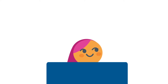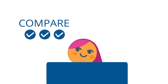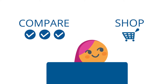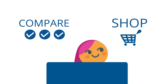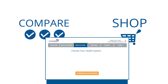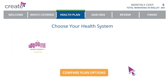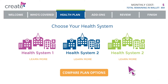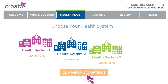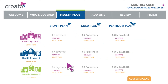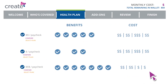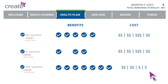Once that is set, you can begin to compare and shop for your health plan. You select the health system that works best for you and your family. Your selections will form a side-by-side comparison of costs, coverage levels, and benefit details.